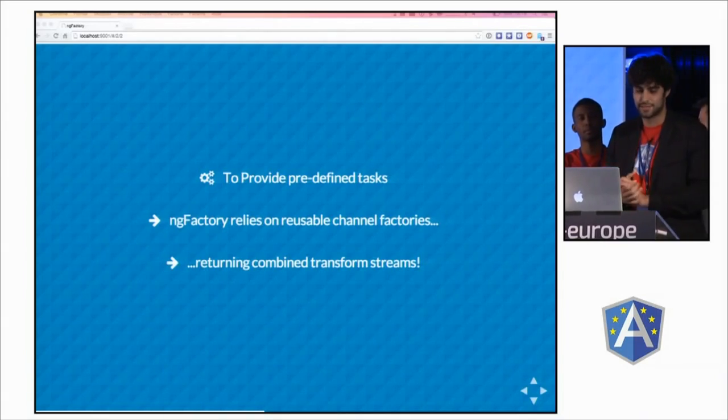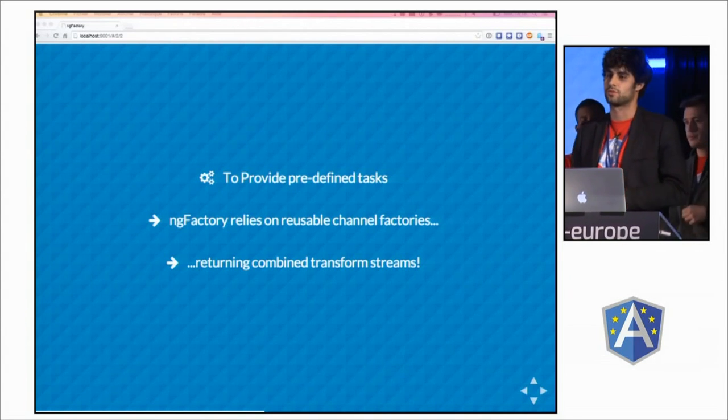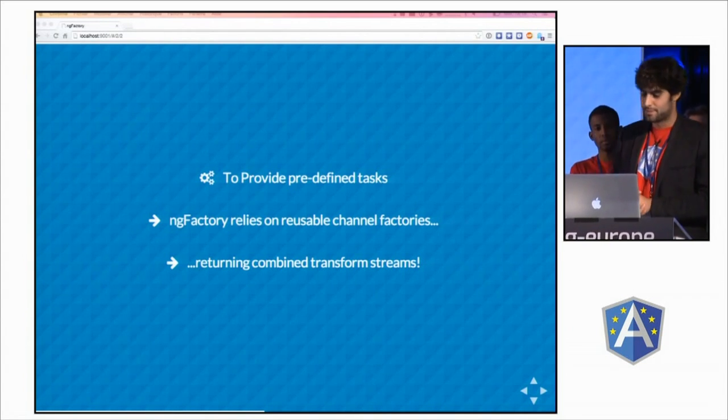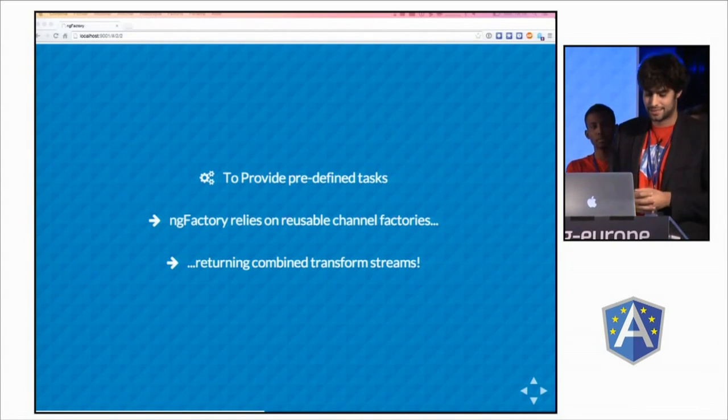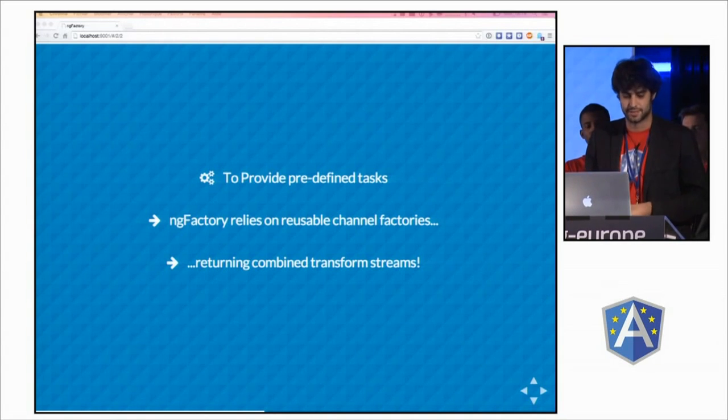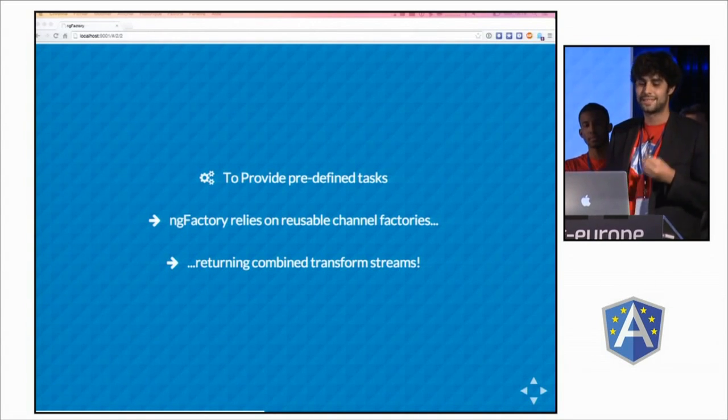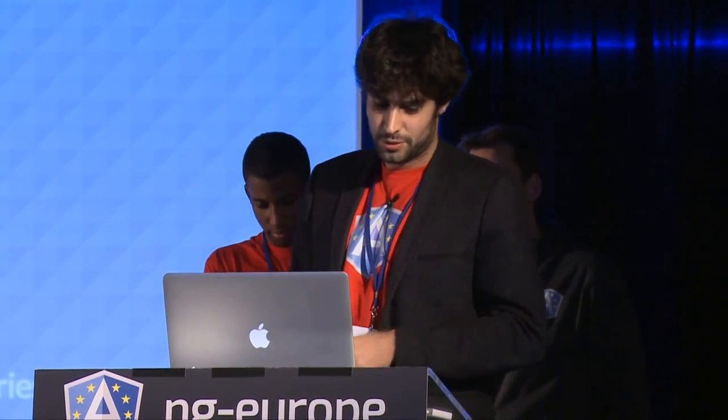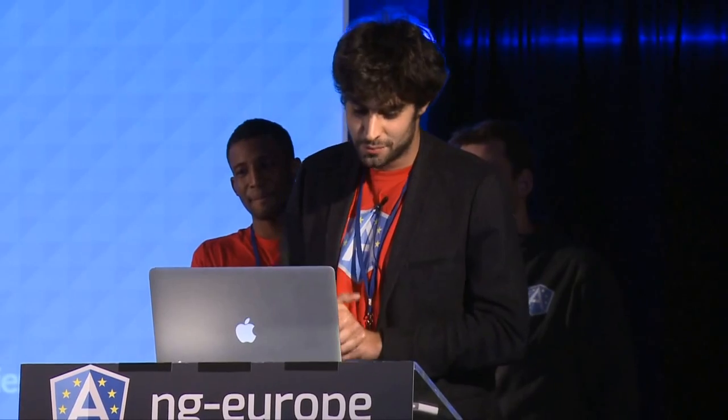The idea was to provide generic tasks that could be used and required by your Gulp file. But the issue with Gulp tasks is that they are really quite monolithic and not really reusable, at least with the current Gulp orchestrator. So we needed way more flexibility and had to find something else. That's why we came up with something called combined transform stream factories.